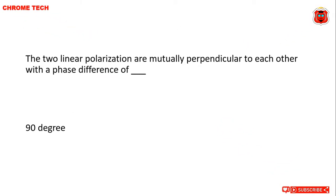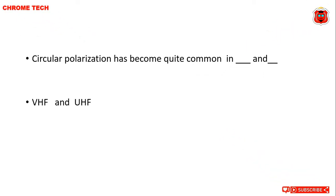The two linear polarizations are mutually perpendicular to each other with a phase difference of dash. The correct answer is 90 degrees. Circular polarization has become quite common in dash and dash. The correct answer is VHF and UHF.